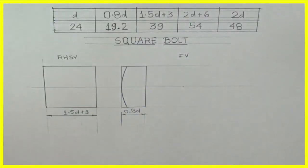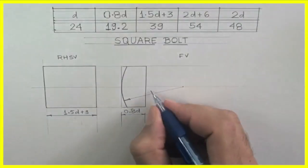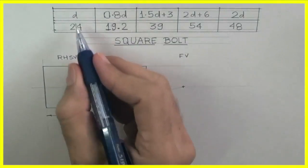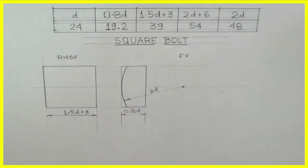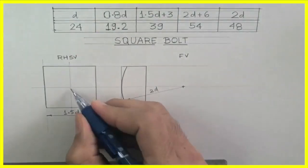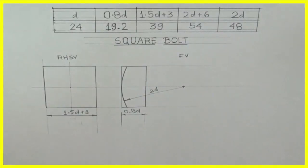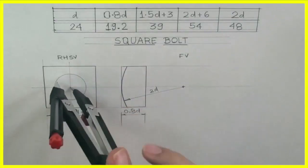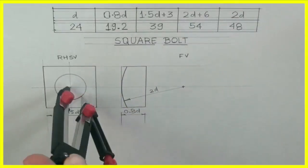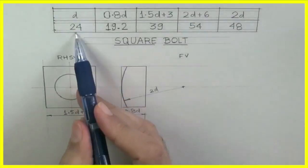So I will take 2d in my compass and I will draw radius. Then I will take d equals 24, so I will take the center of right-hand side view and I will draw radius 12. This will be full circle and I will draw one more radius.